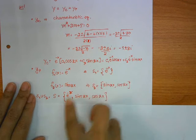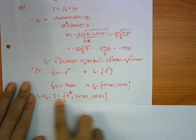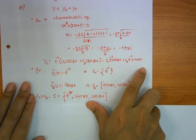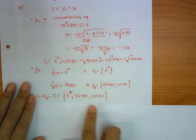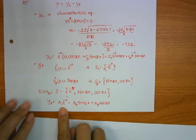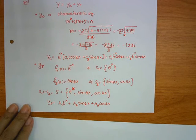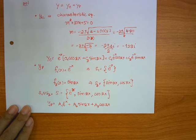Because the functions in the UC set and in yc are not the same, we can directly assume yp. So yp equals a1 times exponential of minus x, plus a2 times sine 2x, plus a3 times cosine 2x.